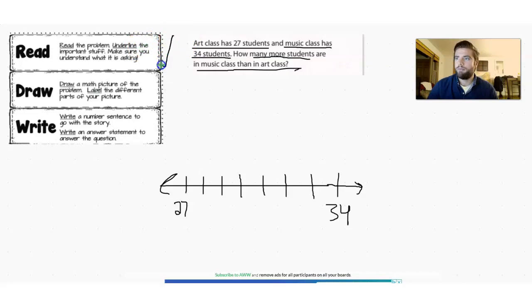So we already read the problem and underlined the important parts. So I'll put a nice check mark there. Now we're doing the drawing part. So 27 students in art class, excuse me, and 34 students in music class.